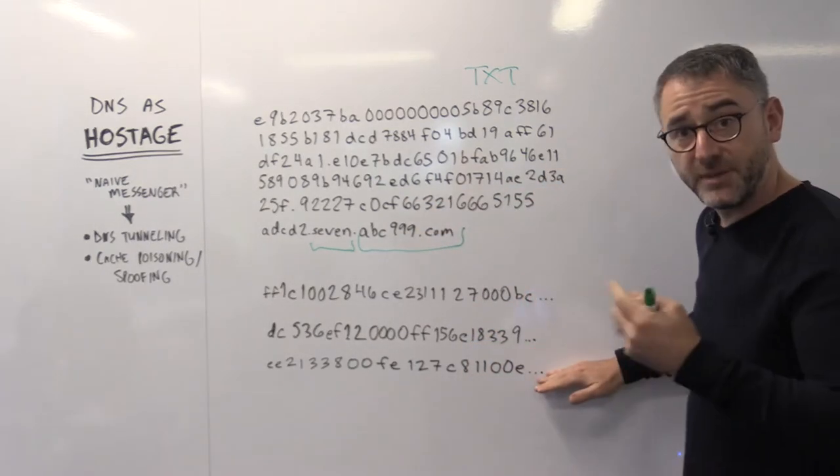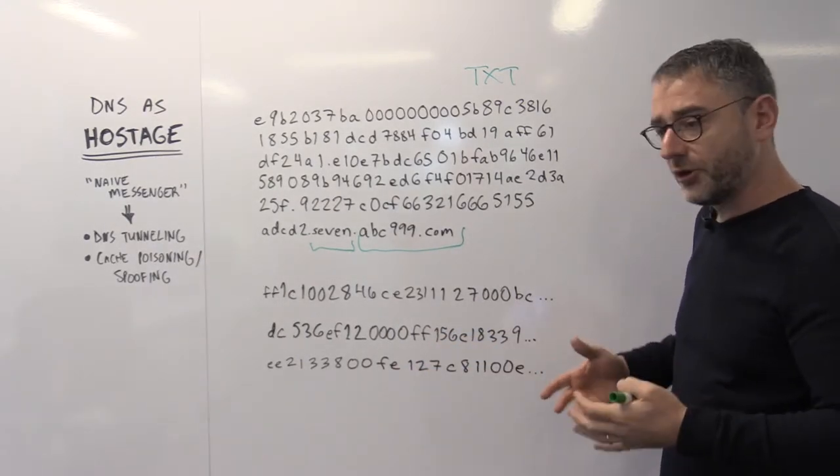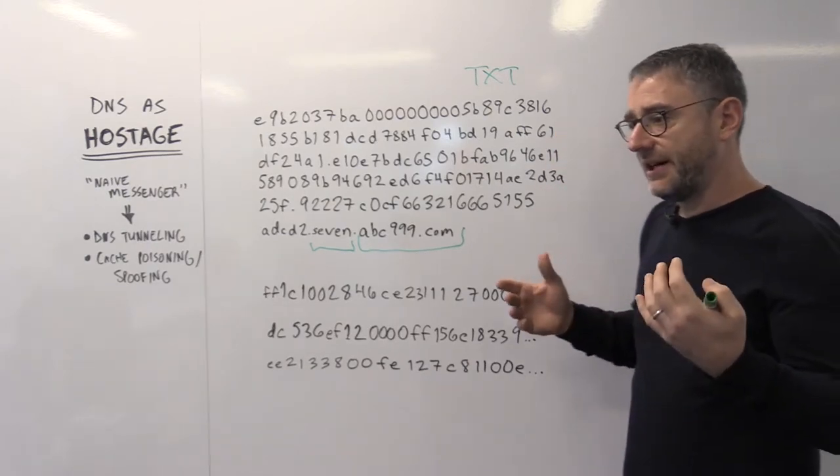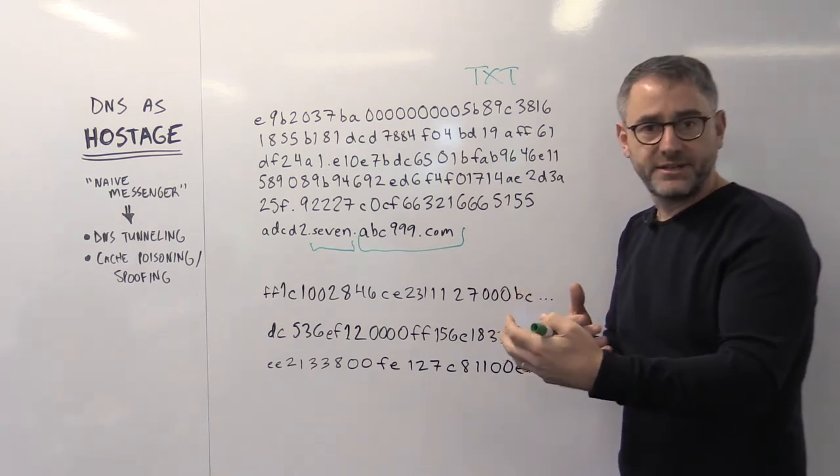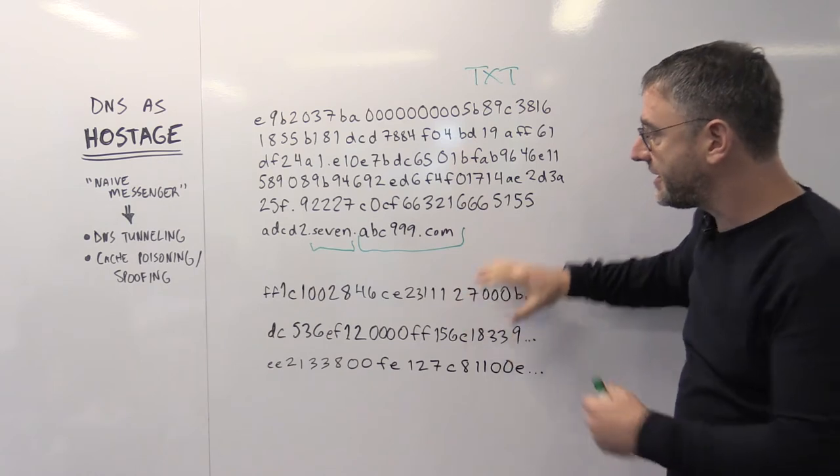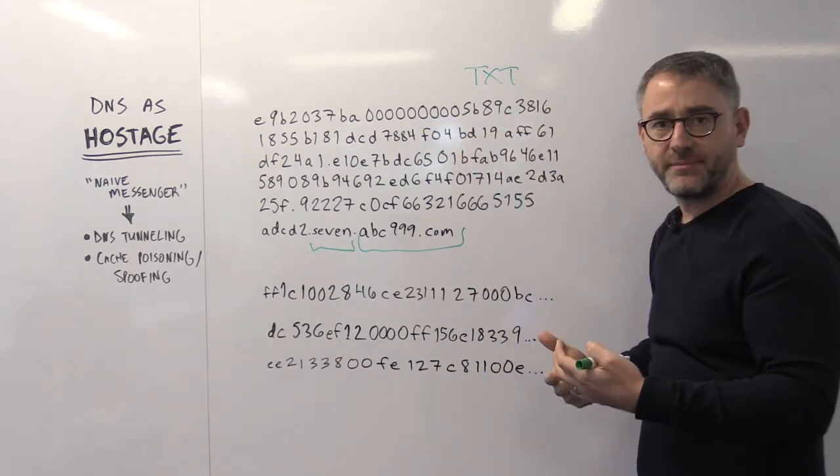Finally, the DNS server might respond with a command to execute, for instance. I can look also for patterns that demonstrate file exfiltration. I can look at things like query size. I can decode text records. There's all sorts of ways to analyze a series of queries coming from a single client to understand if tunneling is happening.